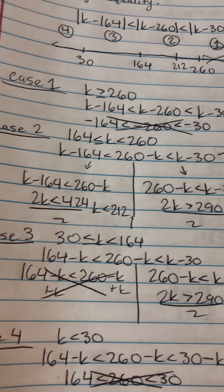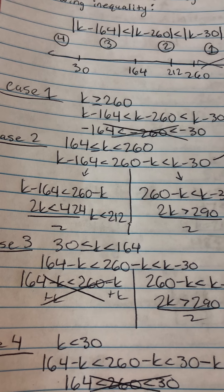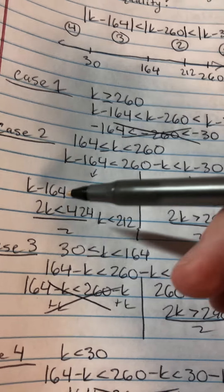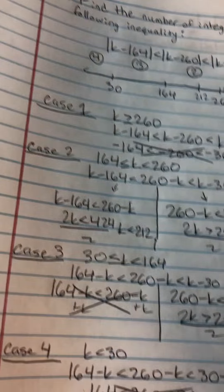So I would get 164 minus k is less than 260 minus k, which is less than k minus 30. And you see that the k minus 164 became 164 minus k, since k is less than 164 for this.